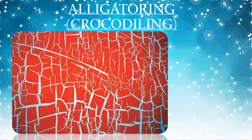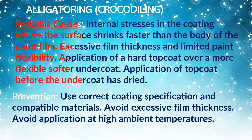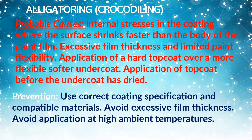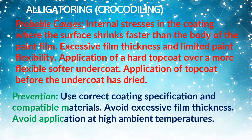Alligatoring. Probable causes: internal stresses in the coating where the surface shrinks faster than the body of the paint film; excessive film thickness and limited paint flexibility; application of a hard top coat over a more flexible, softer undercoat; application of top coat before the undercoat has dried. Prevention: use correct coating specification and compatible materials, avoid excessive film thickness, and avoid application at high ambient temperatures.